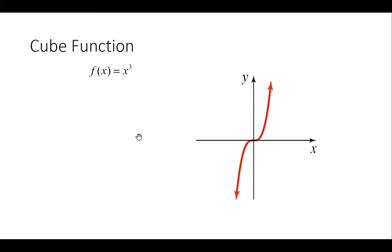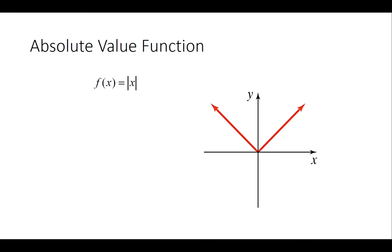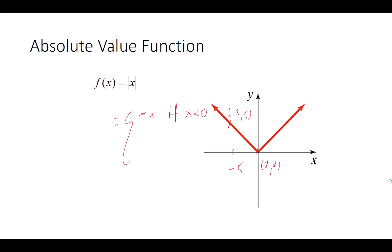Next is the absolute value function. Absolute value means that for negative x values, the output is the negative of that value — so negative of a negative gives a positive. For example, when x is negative 5, the value is positive 5. For x of 0 the value is 0, and for positive x it is just the positive value itself. This creates a V-shaped graph.